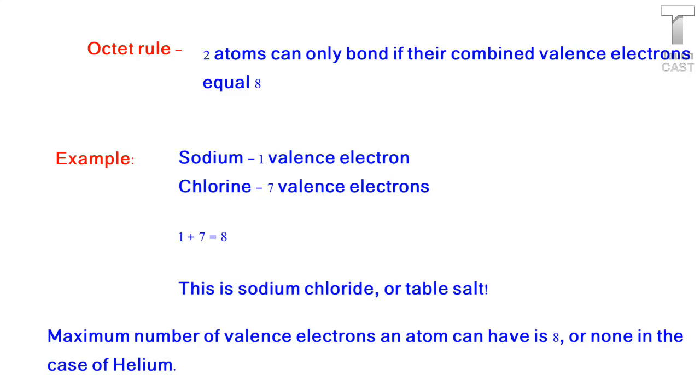When atoms bond, they follow what we call the octet rule. And the octet rule means that two atoms can only bond if their combined valence electrons equal 8.